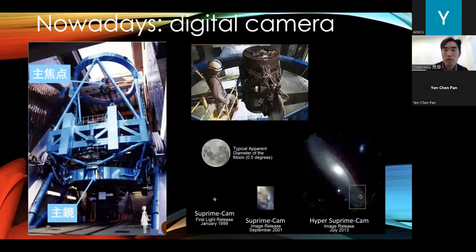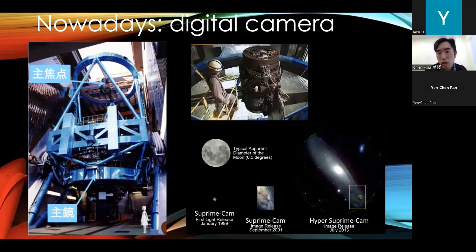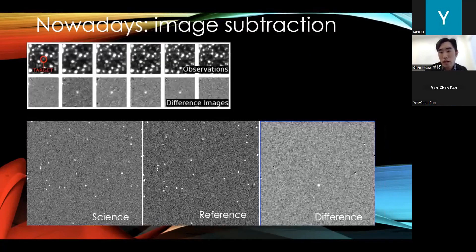Nowadays we have modern electric cameras — really large format cameras equipped on the largest telescopes in the world. For example, here I show one instrument called the Hyper Suprime-Cam on the prime focus of the Subaru telescope. It's really huge — about three tons, like three small cars — hanging high in the prime focus. With this at least, we're able to image a very large portion of the sky. You can see it can image almost the entire Andromeda galaxy, which is about three times the size of the full moon. That's really amazing. And with these very sensitive detectors, we don't need to rely on the blink comparator anymore.